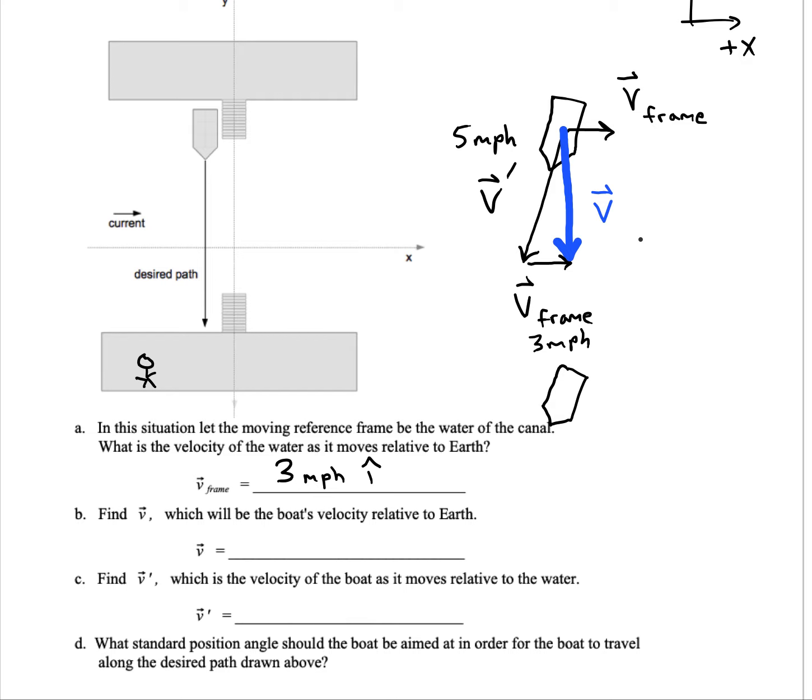You just have to find V through the Pythagorean theorem - it's a right triangle. V prime squared is going to equal V frame squared plus V squared. V and V frame are like legs of the right triangle. We know this is a 5 and V frame is a 3, so if you solve that, V is a 4.